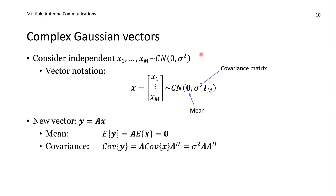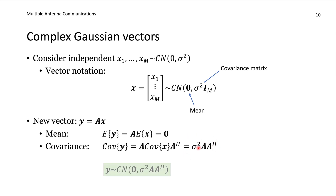We can also create a correlated complex Gaussian random vector. If we take x and multiply by a matrix A to get y = Ax, the mean of y is A times the mean of x, which is still zero. The covariance matrix of y is A times the covariance of x times A Hermitian, giving sigma squared times A*A^H. This yields a new complex Gaussian distribution with that correlated covariance matrix.